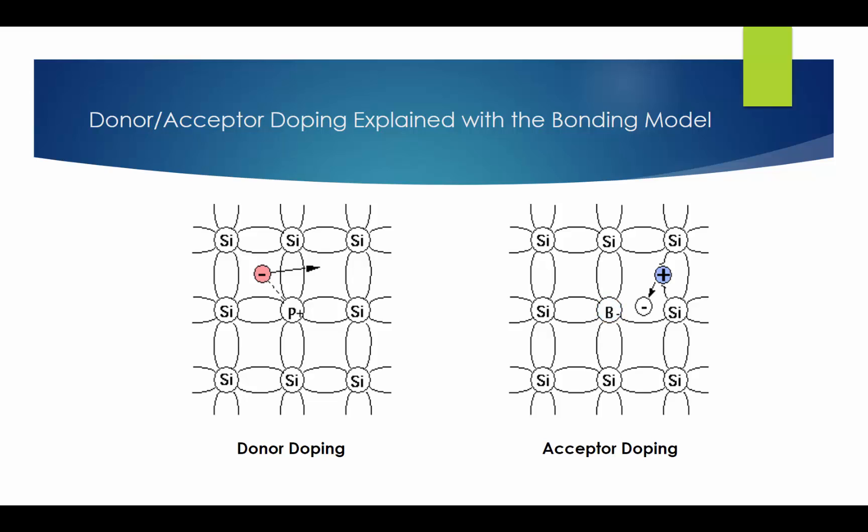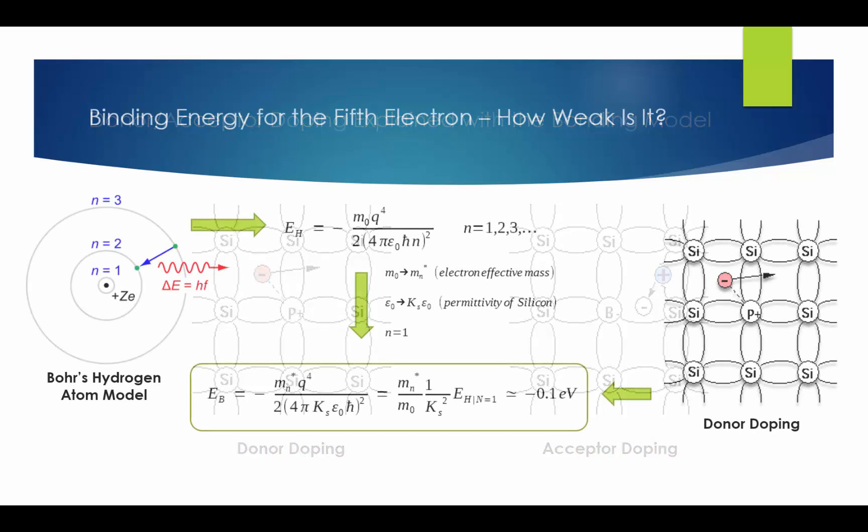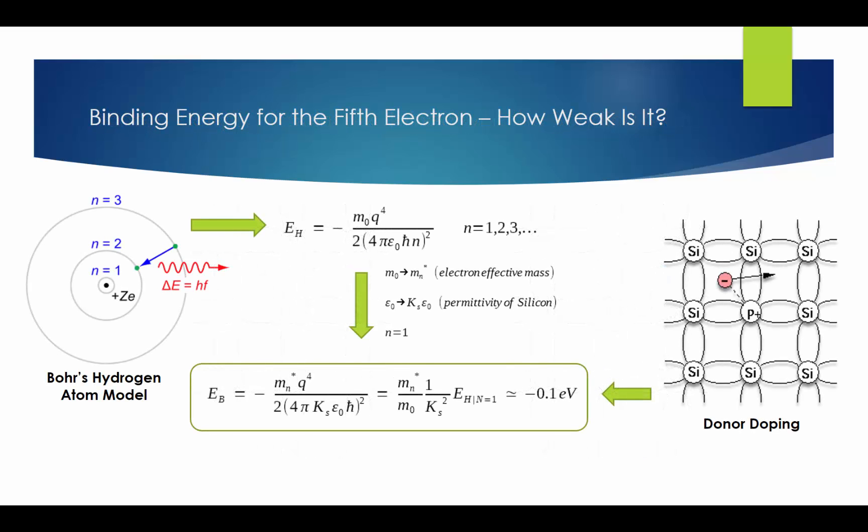In the acceptor doping process, only the hole concentration is increased. The electron concentration is not affected at all. The bonding model in the last slide helps us visualize the spatial relationship. However, it does not quantitatively tell us exactly how much energy is involved. Instead, we need to use the energy band model.